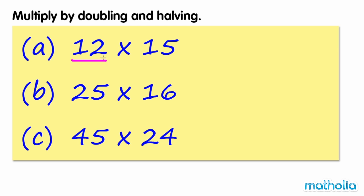Halving 12 gives 6, and doubling 15 gives 30. 6 times 3 equals 18, so 6 times 30 equals 180. 12 times 15 equals 180.